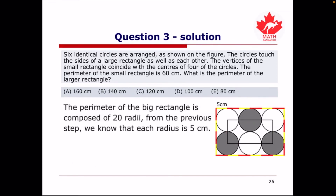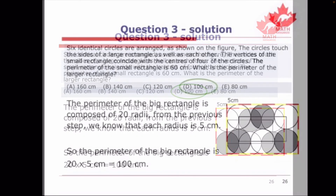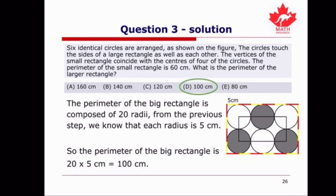The perimeter of the large rectangle is composed of 20 radii. Since each radius is 5 centimeters, the perimeter of the large rectangle is 20 times 5, or 100 centimeters. This corresponds to answer choice D.